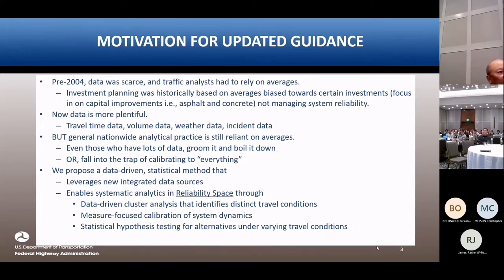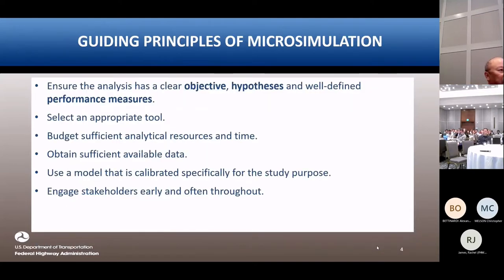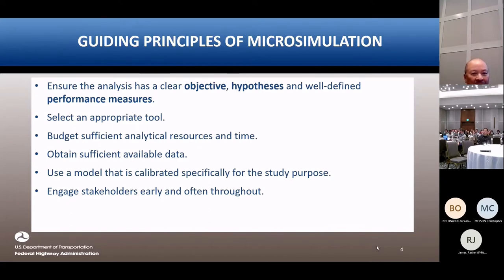In 2004, this was addressed but you had to go into the appendices to find it — it was not embedded in the full document text. Now it's prevalent in the new document text itself. The other big thing is the reliability space. We are now focusing on different characteristics of our system and how we capture that for the reliability aspect.